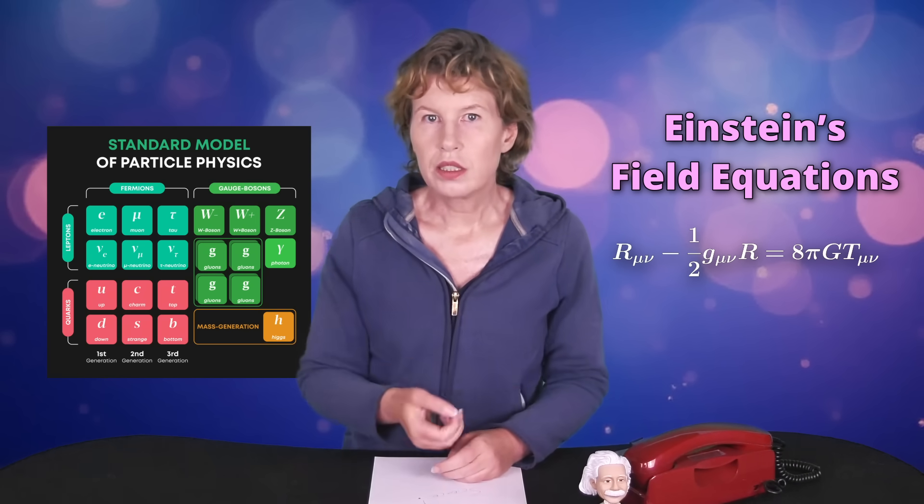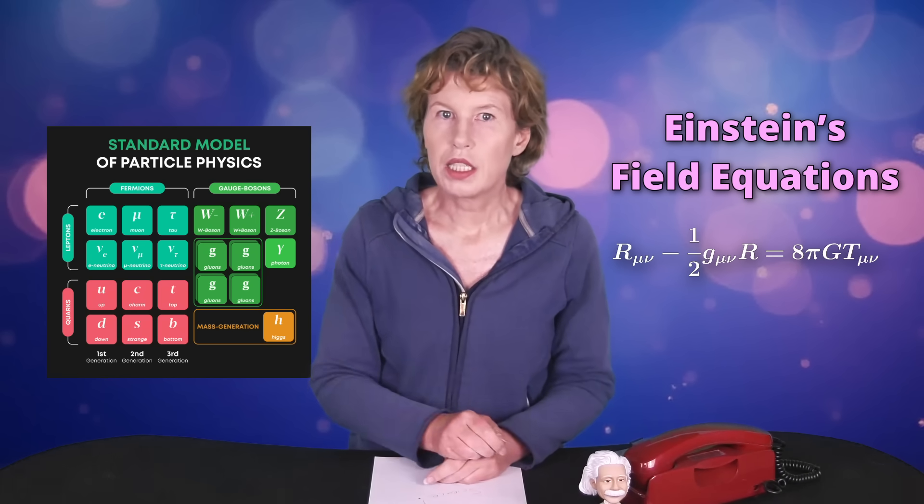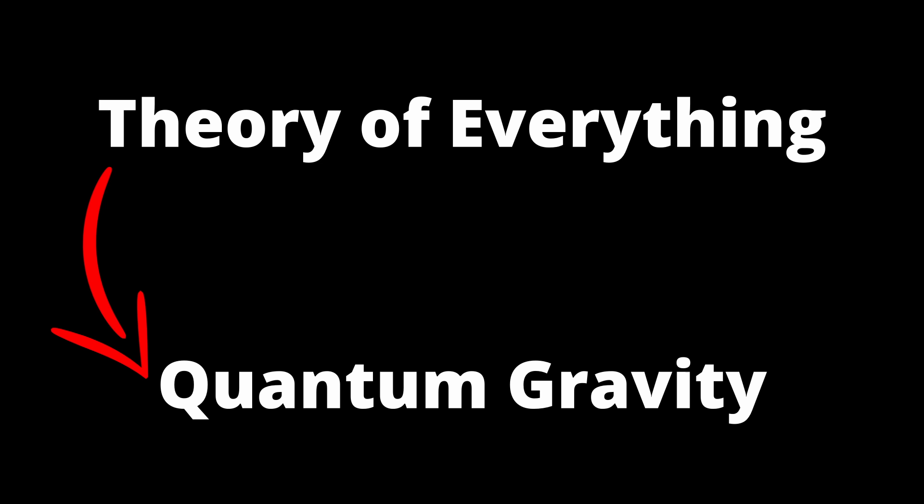The standard model describes the electromagnetic force, the strong nuclear force, and the weak nuclear force. A theory of everything should combine them into one single framework. This means that a theory of everything must also solve the problem of how to combine general relativity with quantum physics, so it necessarily contains a theory of quantum gravity.